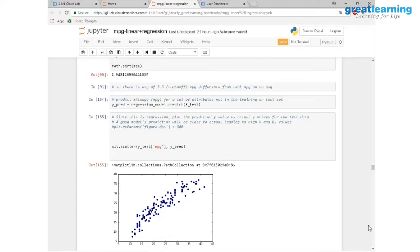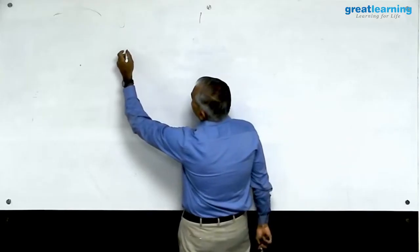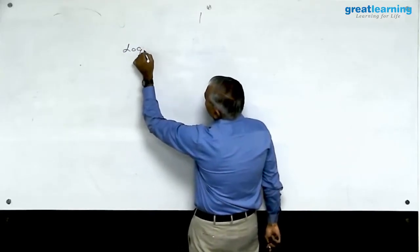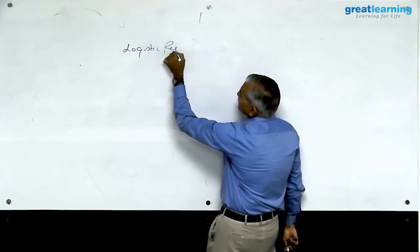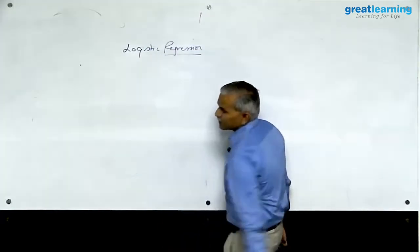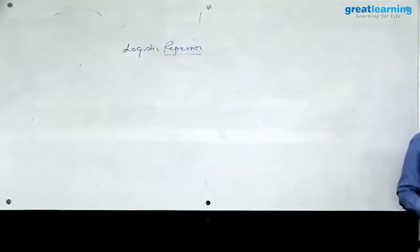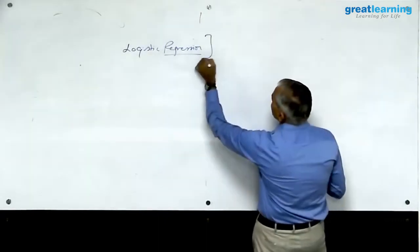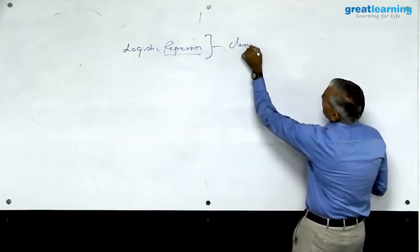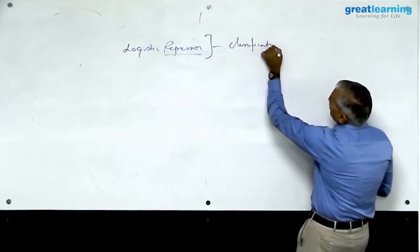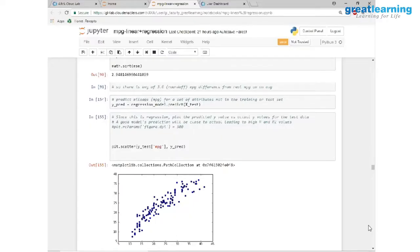Now I am going to take you to a technique model algorithm called logistic regression. We call it logistic regression. The word regression is misleading here. You are not going to predict any values. You are going to do classification. This is only for classifications. It is not for predictions. The reason the word regression is used is underneath this algorithm is actually a linear model.